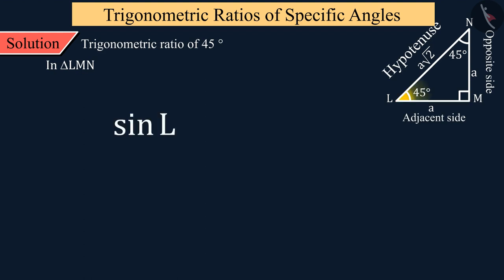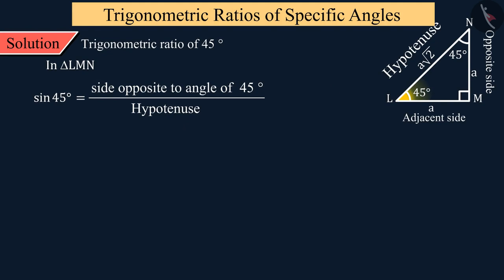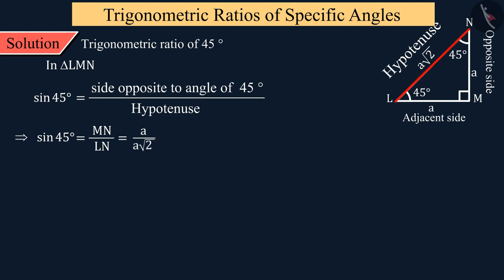Let's talk about sine 45 degrees. As we saw in the previous video, the sine value for an angle theta is equal to the ratio of the opposite side to the hypotenuse. For angle L in triangle LMN, the length of the opposite side is 'a' and the hypotenuse is a√2. On solving this, the value of sine 45 degrees is 1/√2.